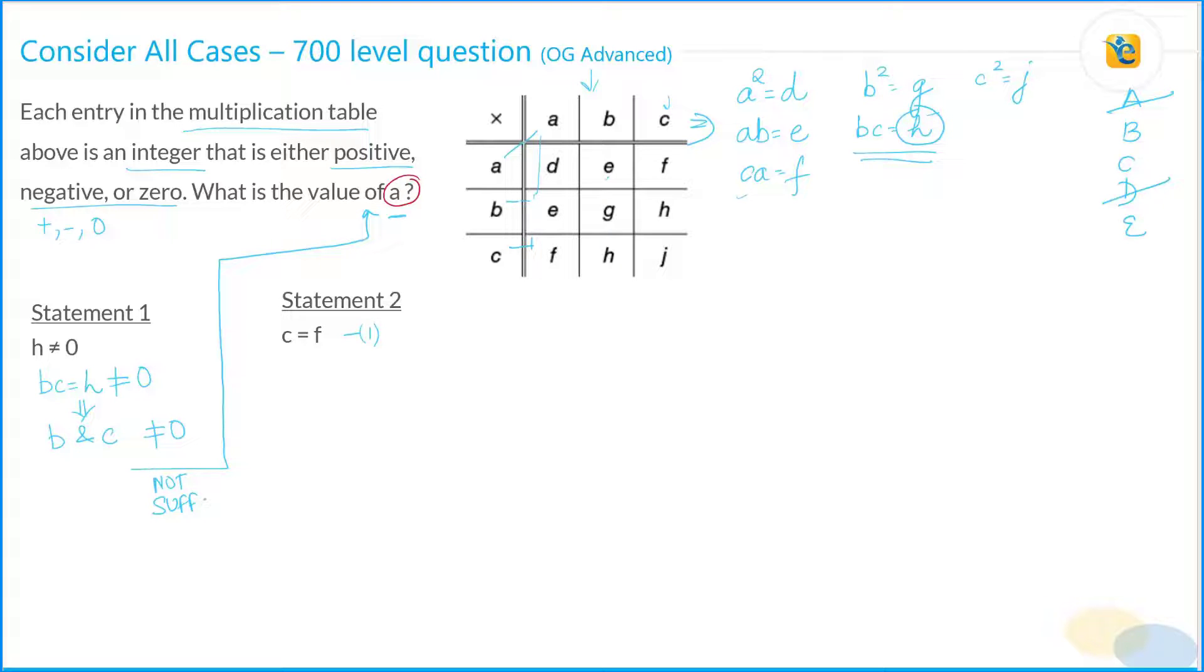Now we take a look at statement two. Statement two says that c is equal to f. That's one bit of information. The other bit of information you need to get from the multiplication table is c times a is equal to f. So let's bring that: ac is equal to f. That's your second equation. Now you observe these two equations and what you end up doing is you look at this: c and f cancel out, which means that a is equal to one.